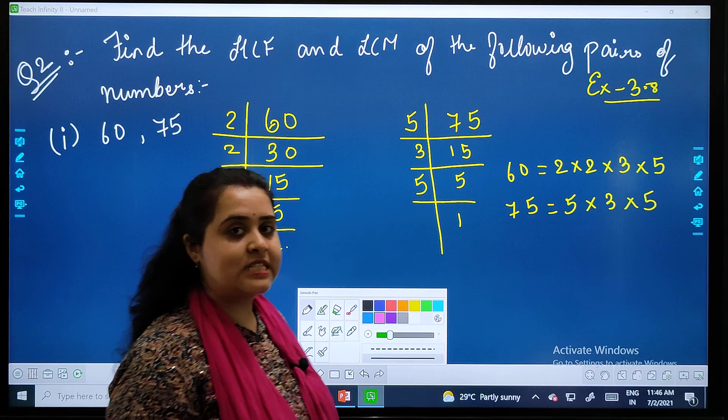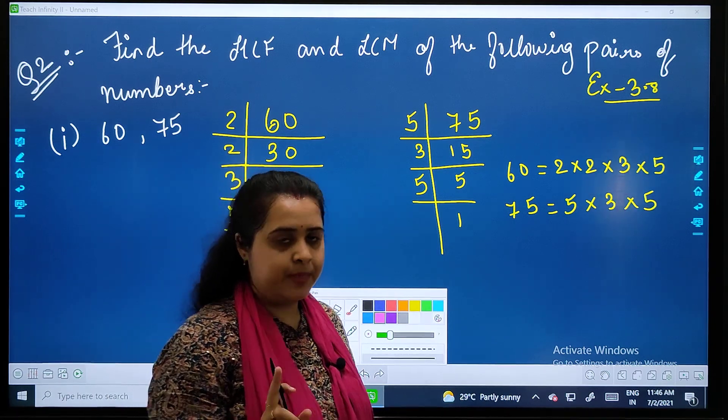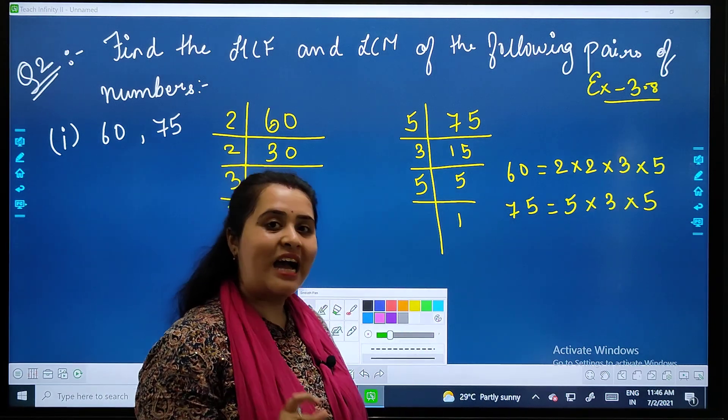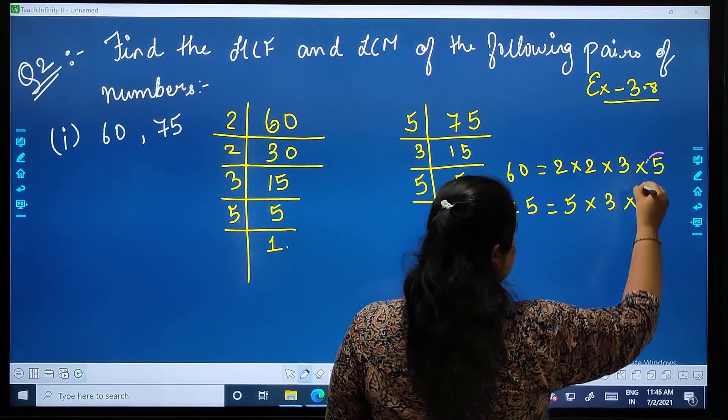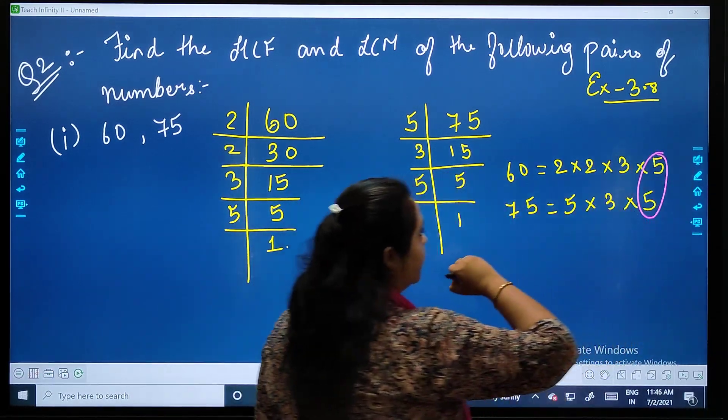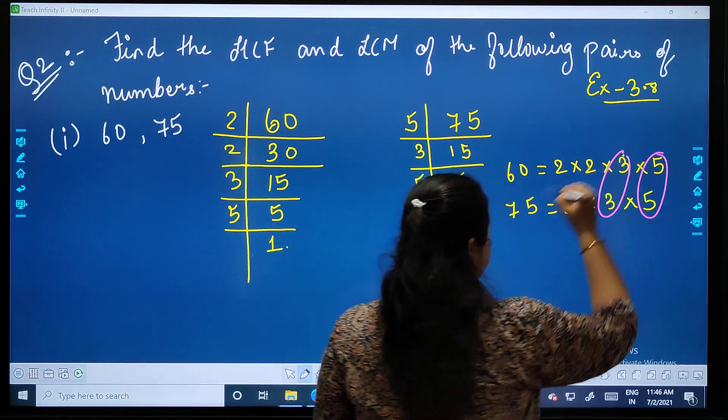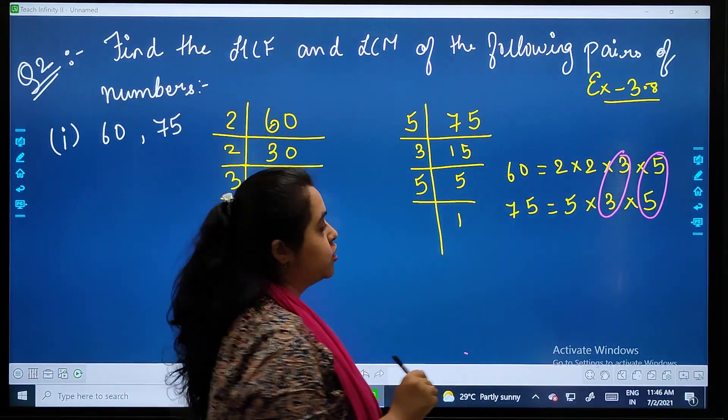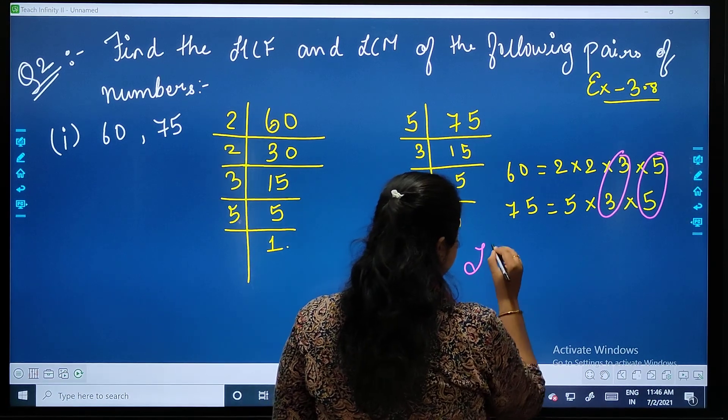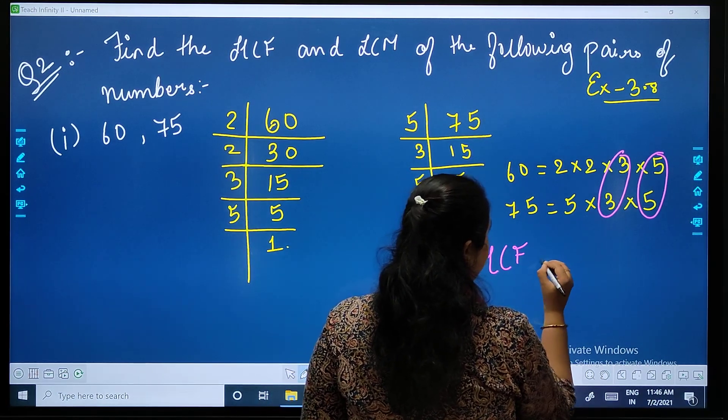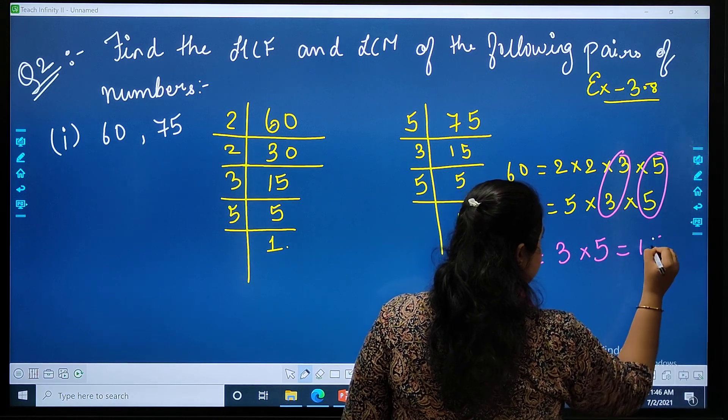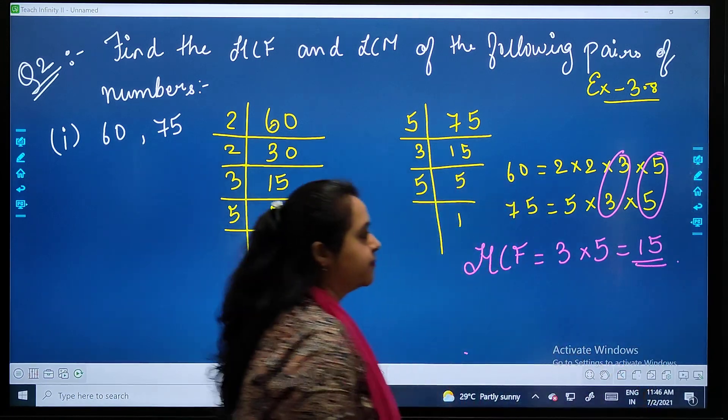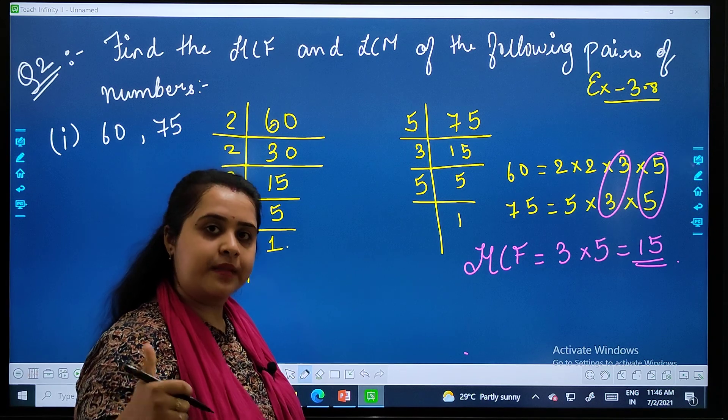So now, for HCF, I am pairing them again. HCF means Highest Common Factor. Now as you can see, 3 and 5 are common in both. So your HCF will be 3 into 5 equals to 15. Done, easy.